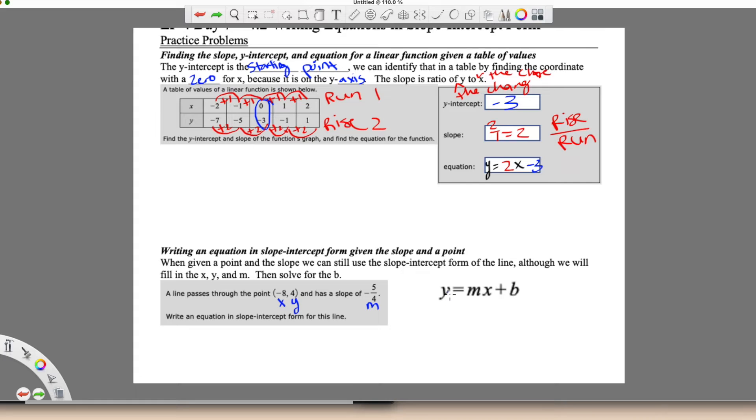So what we're going to do is we're going to fill this in. So y is 4, m is negative five-fourths, x I'm going to put in parentheses is negative 8. What I don't have is the b. So that's what I'm going to solve for.